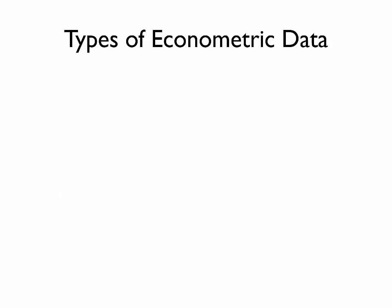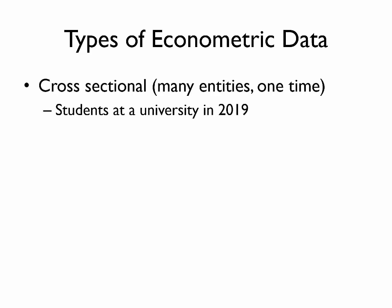Let's start our discussion by making sure we're on the same page about what time series data means. Broadly speaking, there are three types of econometric data. Cross-sectional data describes many entities but one time period. For example, if you had information about individual students at the university at one particular point in time, this would be cross-sectional data where the entity is the student.